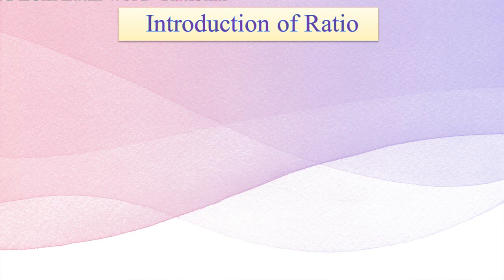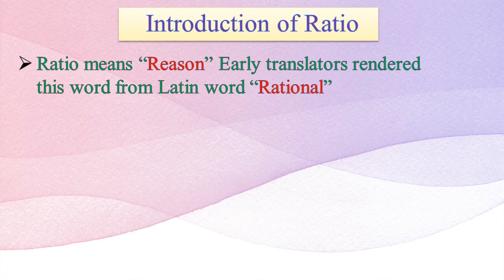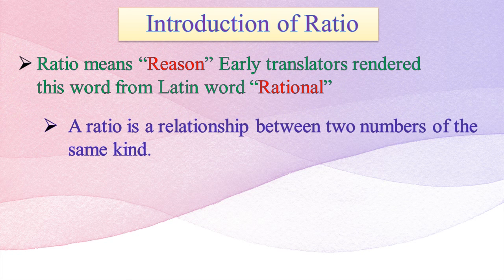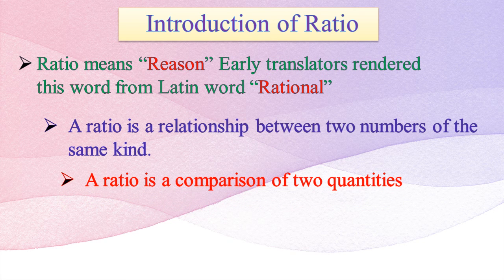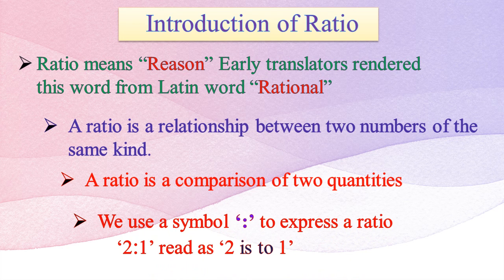Introduction of ratio. The word 'ratio' comes from the Latin word 'rationalis'. A ratio is a relationship between two numbers of the same kind. A ratio is a comparison of two quantities. We can use a colon to express a ratio — for example, 2 is to 1, read as '2 is to 1'.